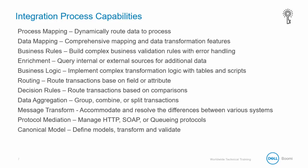Business Logic Tools allow you to implement complex transformation logic with tables and scripts. Routing and Decision Rules allow you to route transactions based on a field or attribute or based on comparison of values. Data Aggregation allows you to group, combine, or split transactions as needed. Message Transformation allows you to accommodate and resolve the difference between various systems. Protocol Mediation allows you to manage HTTP, SOAP, or queuing protocols. And as a canonical model, it allows you to define models, transform, and validate.